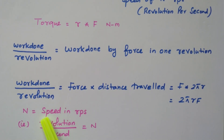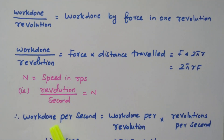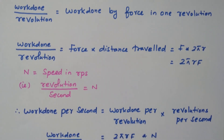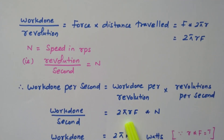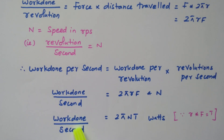The speed N is given in RPS — revolution per second. Work done per second equals work done per revolution multiplied by revolutions per second. Work done per revolution is 2πRF, and revolutions per second is N. So work done per second equals 2πN into T, where R into F is nothing but torque T.